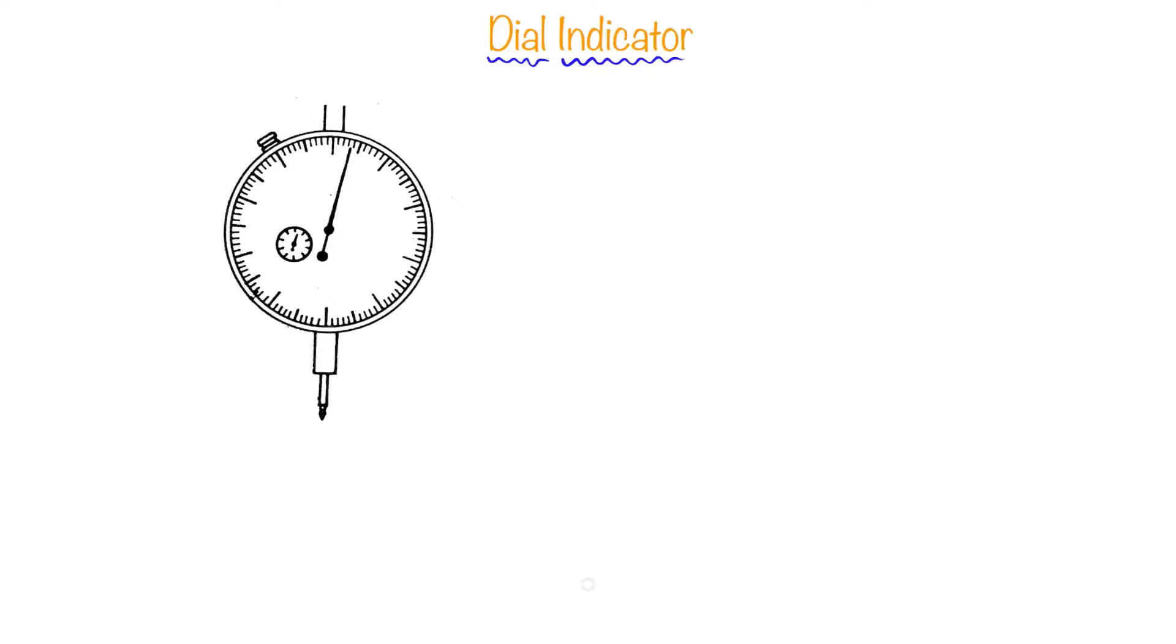Why is this named a dial indicator? Because it has a big dial with a scale around the edges. This is the plunger, this is the dial, and this is the reset button. These dial indicators can be used as comparators.